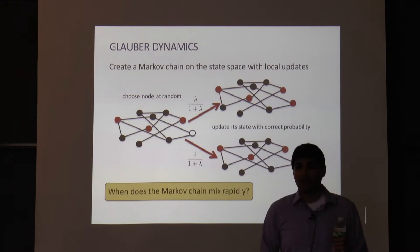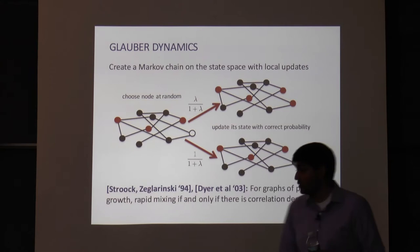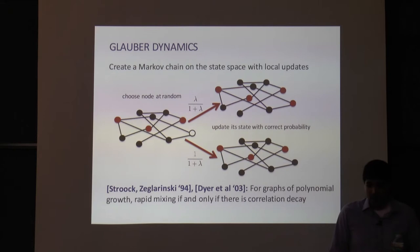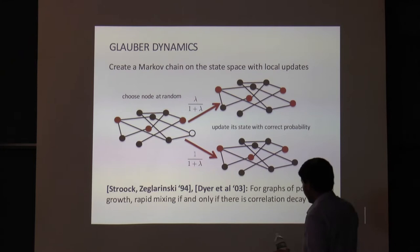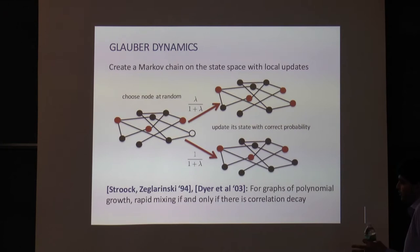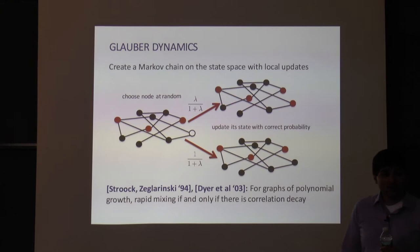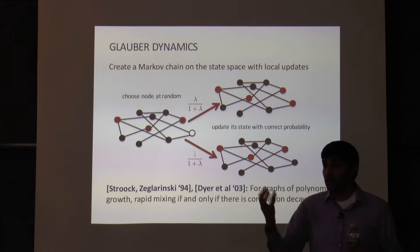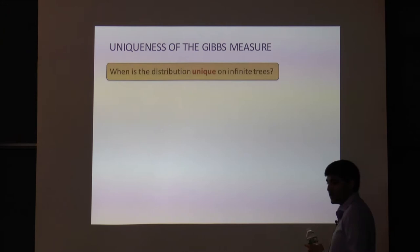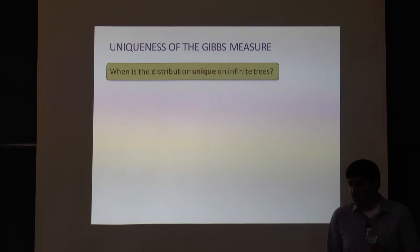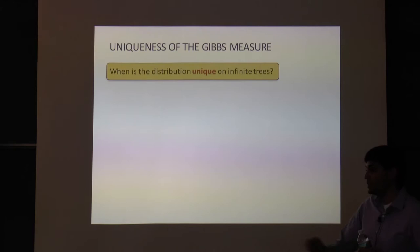It turns out this is exactly the same phase transition as before — when Glauber dynamics mixes quickly and when it doesn't. This goes back to work of Stroock and Zegarliński in '94 for special cases, and Dyer et al. gave a nice combinatorial argument showing that for graphs of polynomial growth, you get rapid mixing if and only if there is correlation decay. Even this notion of correlation decay is intrinsically related to whether or not this Markov chain quickly mixes.